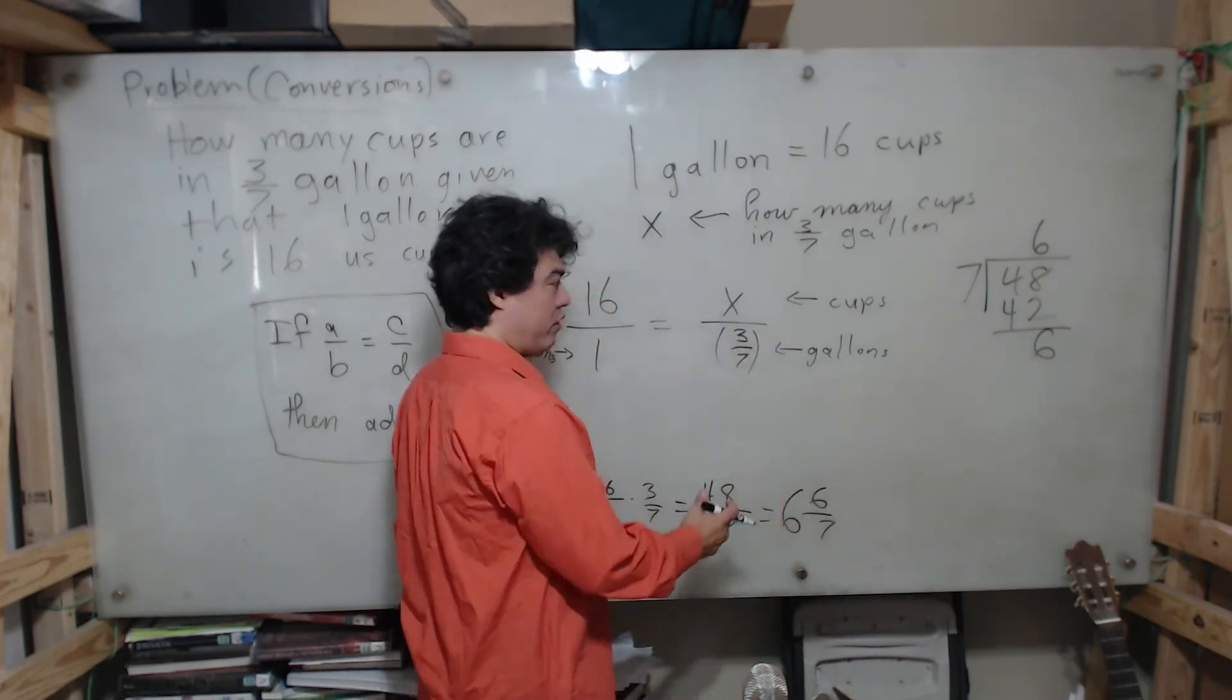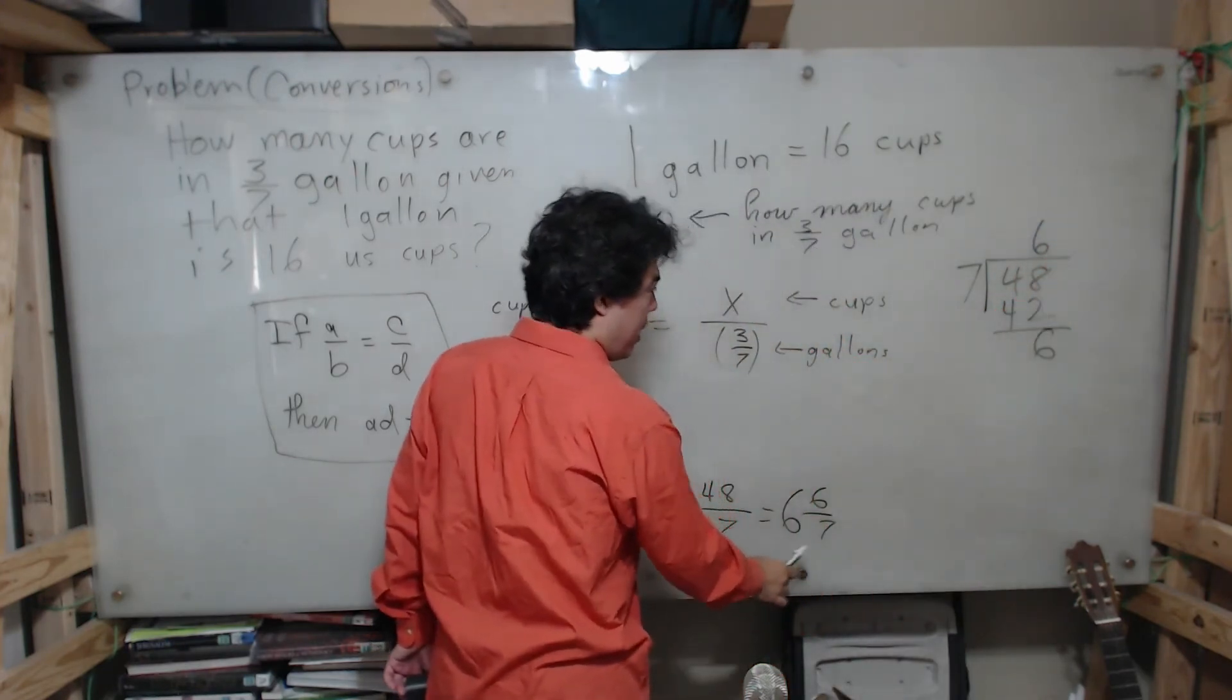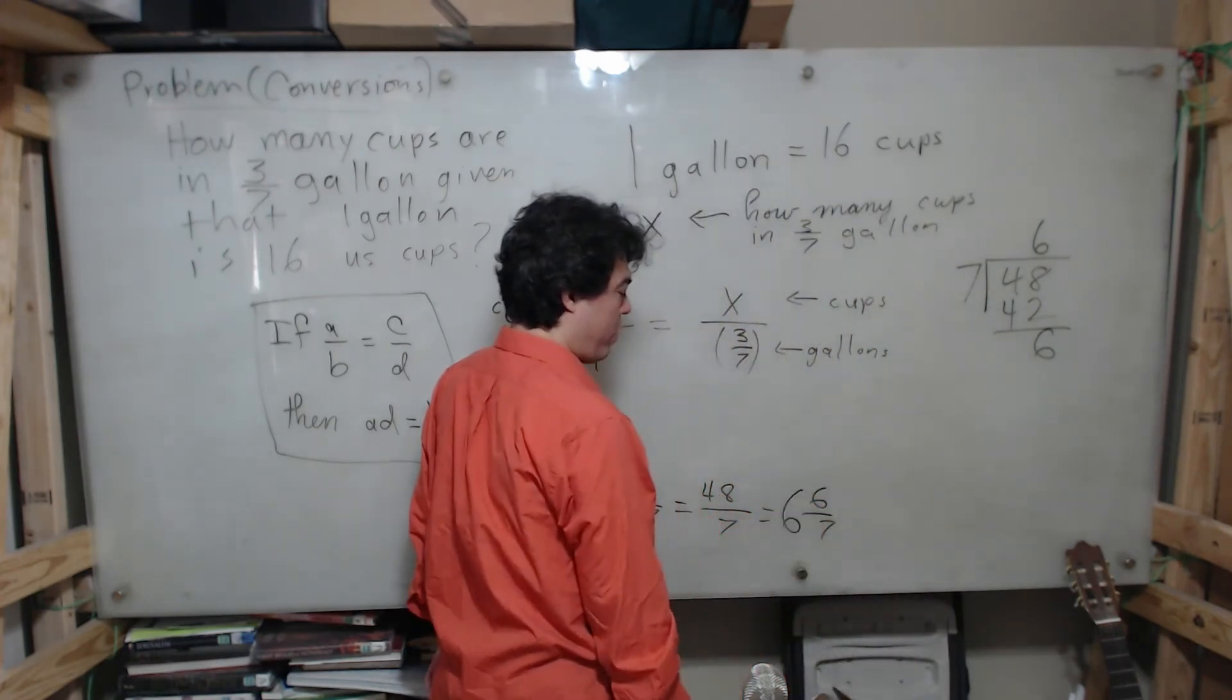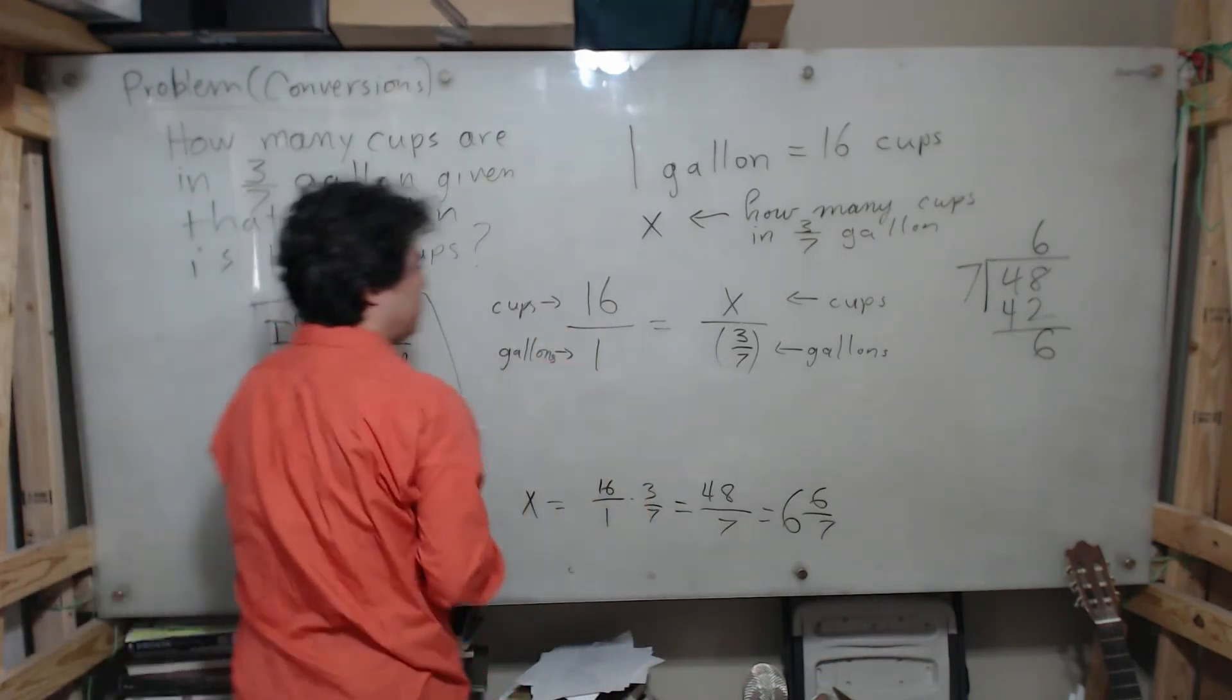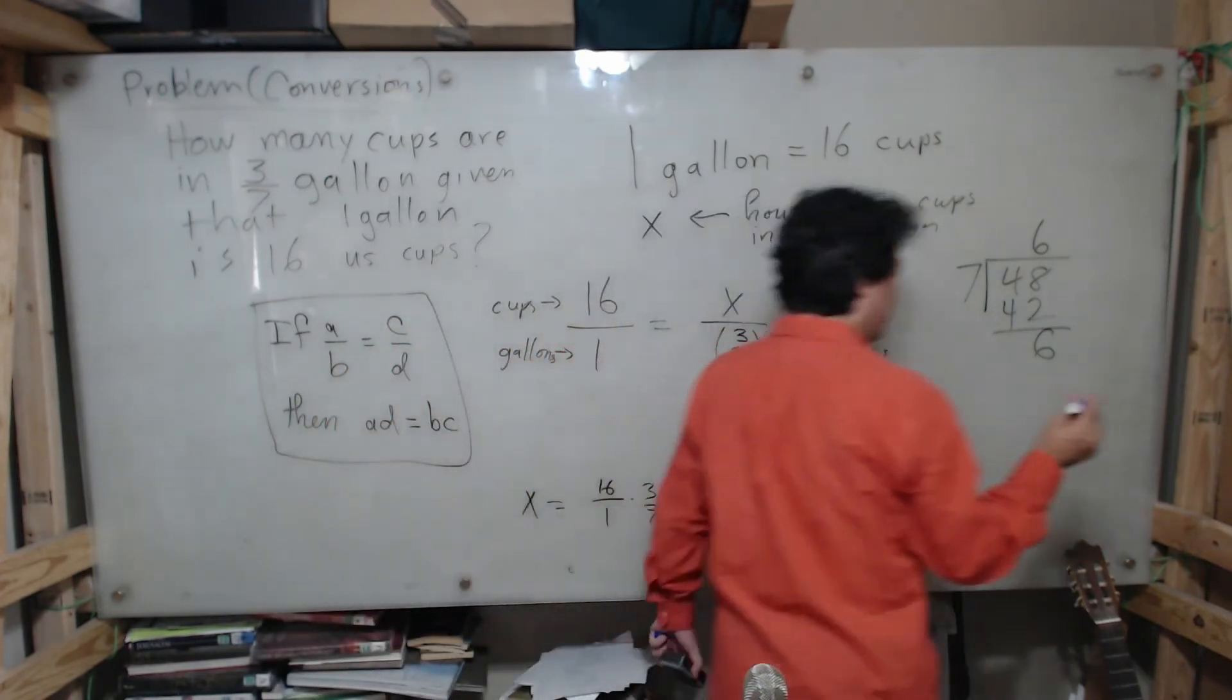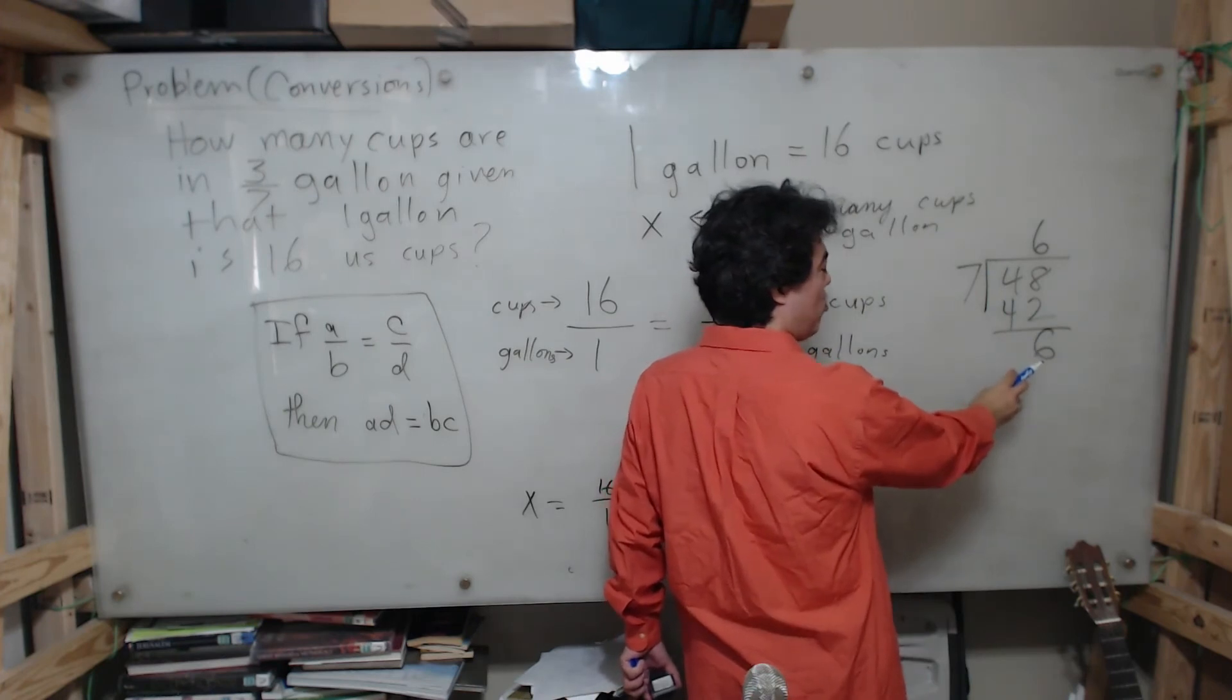X equals 6 and 6 over 7 cups - this is the whole number part and then this 6 becomes the numerator of the fraction part. But if I want, I can write it as a decimal. I can continue the decimal expansion just a little bit in case we want to use liquid measuring cups.